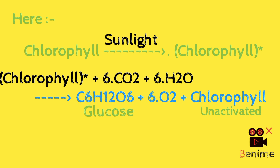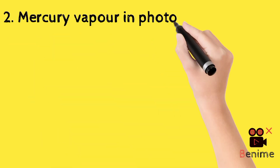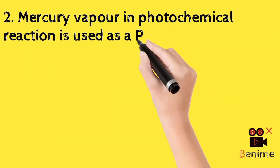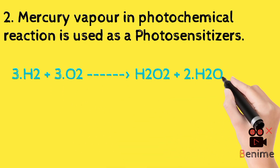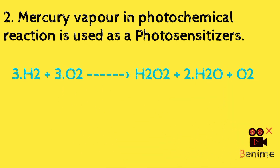Another example is mercury vapor, which is used as a photosensitizer in photochemical reactions.